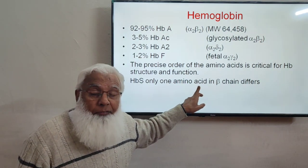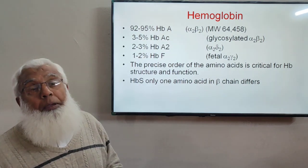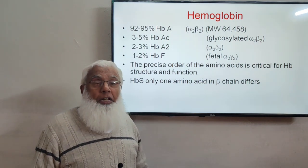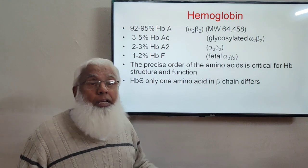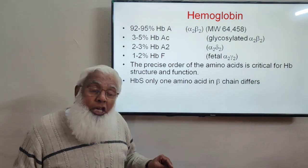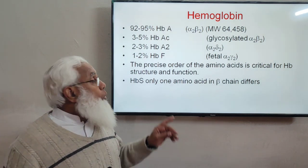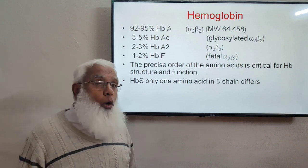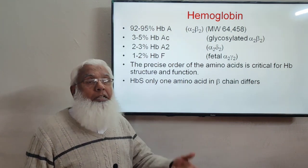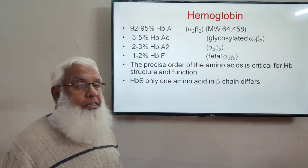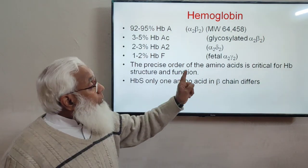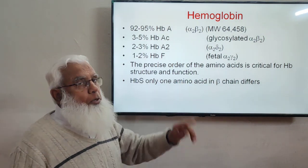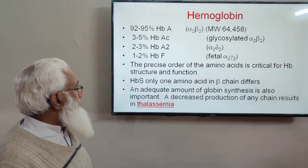Because of this single amino acid change in the beta chain, hemoglobin S precipitates when exposed to low oxygen tension. This precipitation causes destruction of RBCs, which we will discuss in detail when covering sickle cell anemia. The proper sequence of amino acids is therefore critical for normal hemoglobin structure and function.